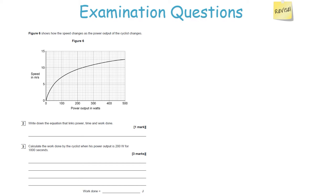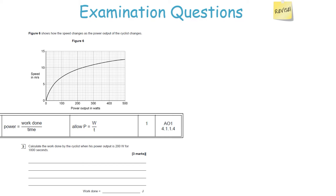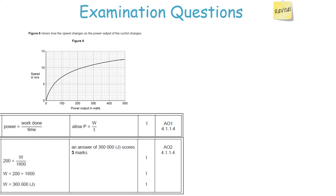It's very important you memorize your key equations. Power is equal to work done divided by time taken — or in symbol form, P equals W over T. To find work done, substitute the values: 200 equals work done over 1,800. This shows the examiner you recognize the power and time terms. Rearranging gives work done equals 200 times 1,800, which equals 360,000 joules. Always check your answer looks sensible — and this does.